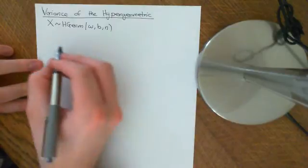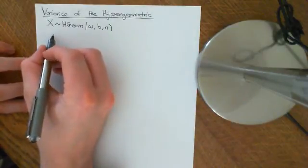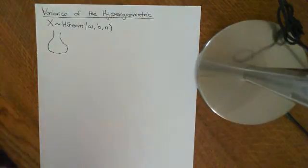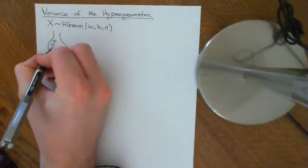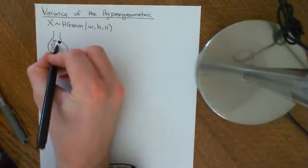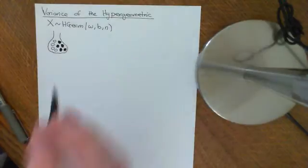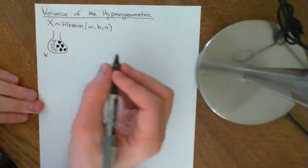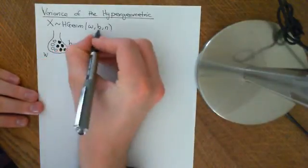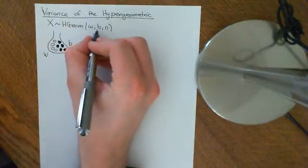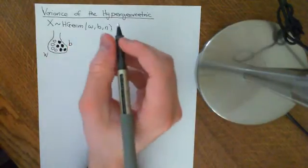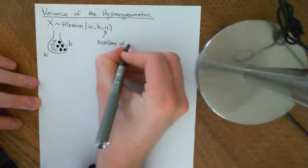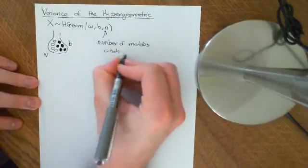The setup is this: the question that motivates the hypergeometric distribution is a simple one. You have a bag full of marbles of two colours — white marbles and black marbles. The number of white marbles is W, and the number of black marbles is B. The final parameter, little n, is the number of marbles that you pick from the bag.